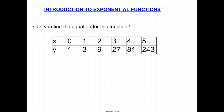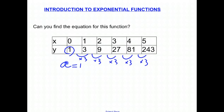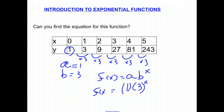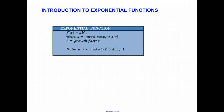So here is a quick example. Can you find the equation for this function? Why don't you press pause and see if you can figure that out. Hopefully you figured it out correctly. You might notice that the initial amount A is one, because we are starting off with one and then we are constantly multiplying by three. So our B is equal to three. Our general form of our exponential is F of X equals AB to the X. In this case, it's one times three to the X.